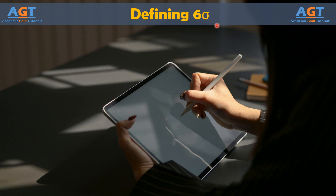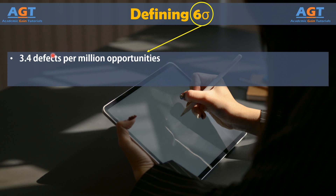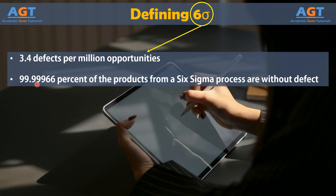At the most basic definition, Six Sigma is a statistical representation of what many experts call a perfect process. Technically, in a Six Sigma process, there are only 3.4 defects per million opportunities. In percentages, that means 99.999966% of the products from a Six Sigma process are without defect.